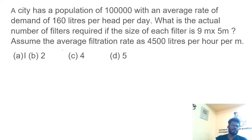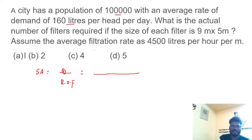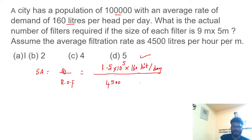We are asked to find the area or number of filters. We can use the expression: surface area = discharge Q / rate of filtration. The discharge Q is designed based on maximum daily demand. Maximum daily demand = population × per capita demand. Population is 10⁵ and per capita demand is 160 liters per day. Using a factor of 1.5, the maximum daily demand = 1.5 × 10⁵ × 160 liters per day, divided by 4500 liters per hour per meter square.